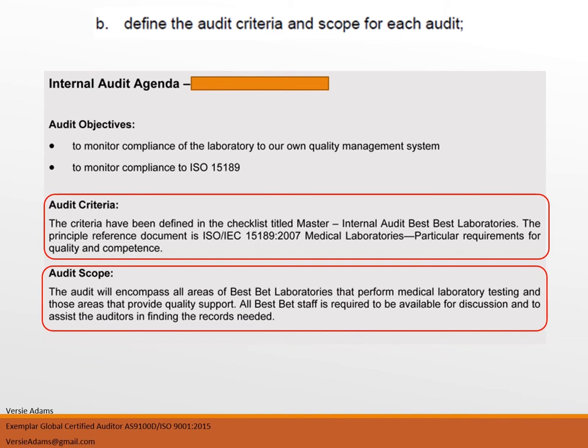AS 9.2.2(b) states the organization shall define the audit criteria and the scope for each audit. In this example, you can see this organization has defined both the audit criteria and the audit scope. For your organization, your audit criteria and scope will vary based on a number of factors such as facilities, employees, and the processes involved. But this is an example of how to properly define your audit criteria and audit scope.